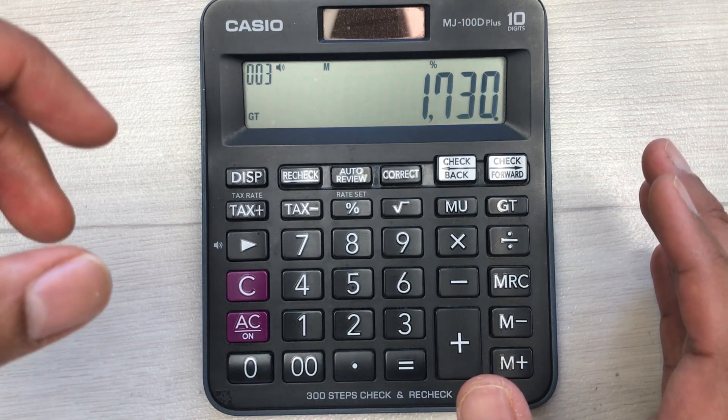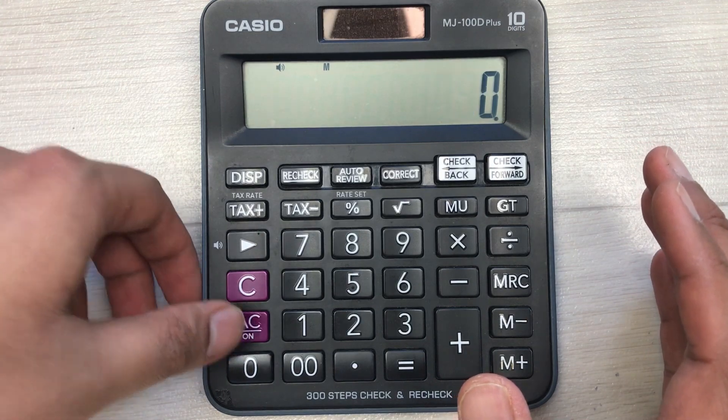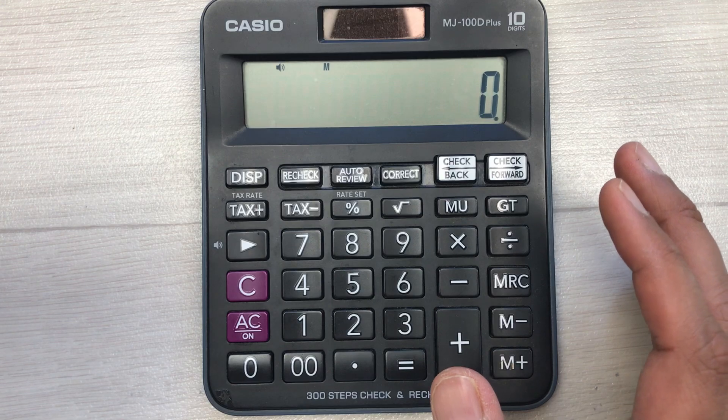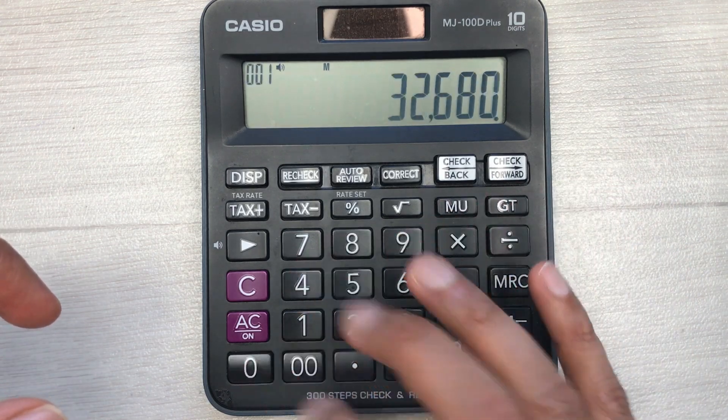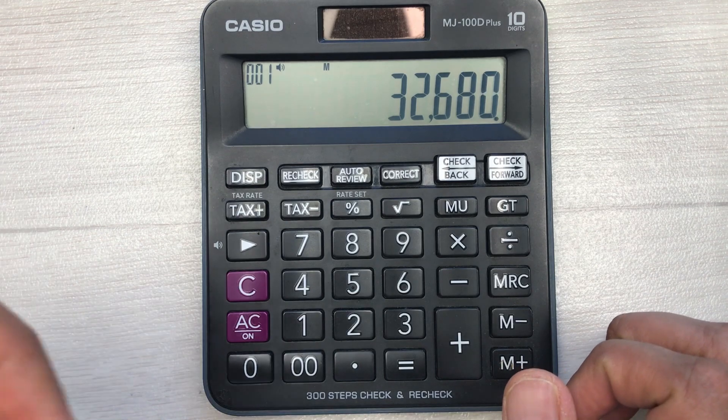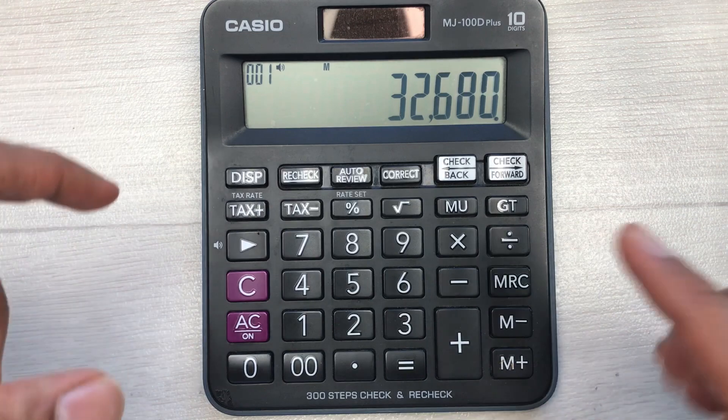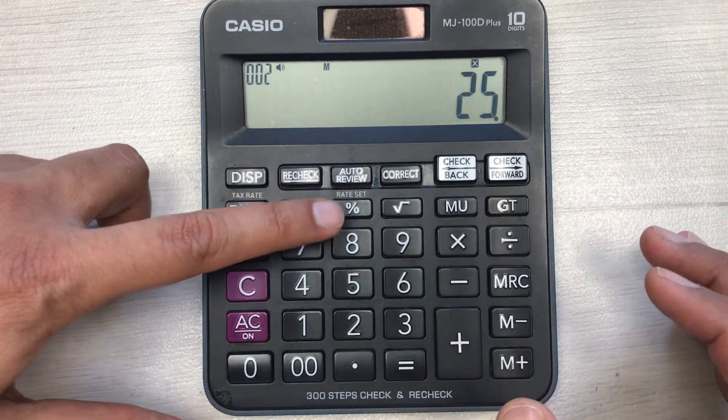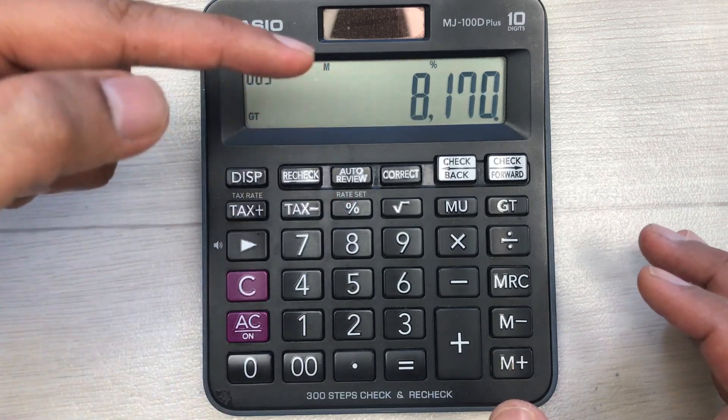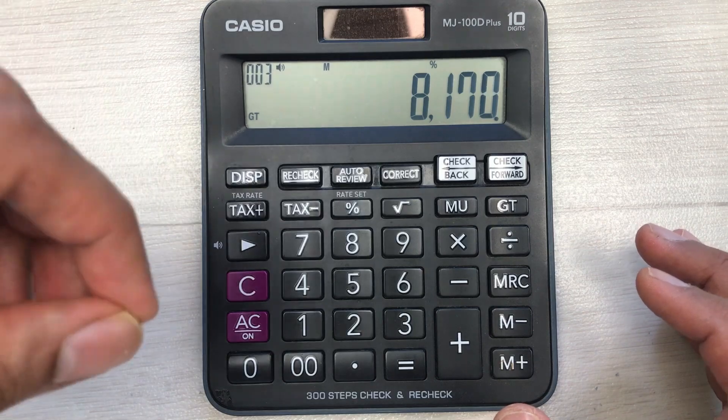Let's move to another example. We have an item with a price of 32,680, and you want to find out the final price after 75% discount. Multiply it with 25 and then press the percentage button. Here is your final answer: 8170 is the final price after 75% discount.